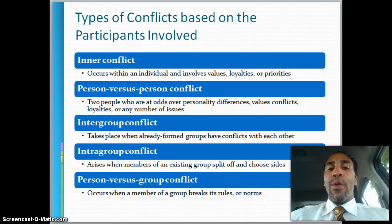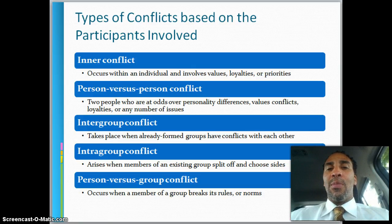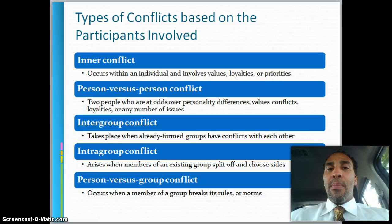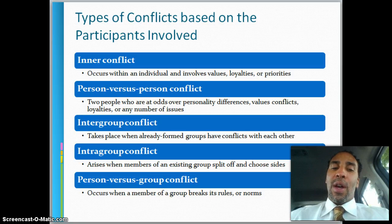Intergroup conflict takes place when already formed groups have conflicts with each other — customer service versus sales, customer service versus claims, claims versus sales. You always hear 'those people' and 'these people.' I managed one office in Irvine and one in Fresno, and you could see a clear divide between how the people treated each other. The internal offices got along collectively, but between the two locations it was 'those Fresno people' and 'those Irvine people.'